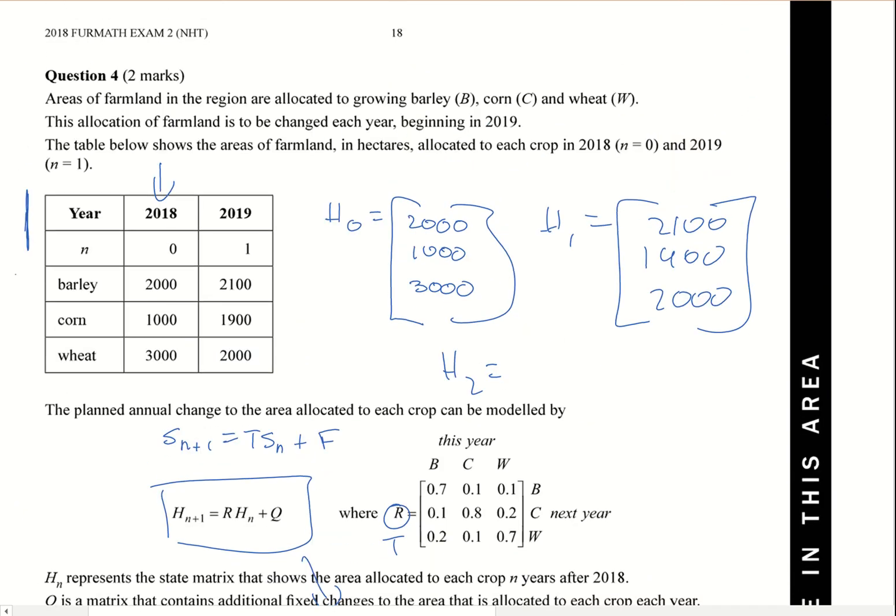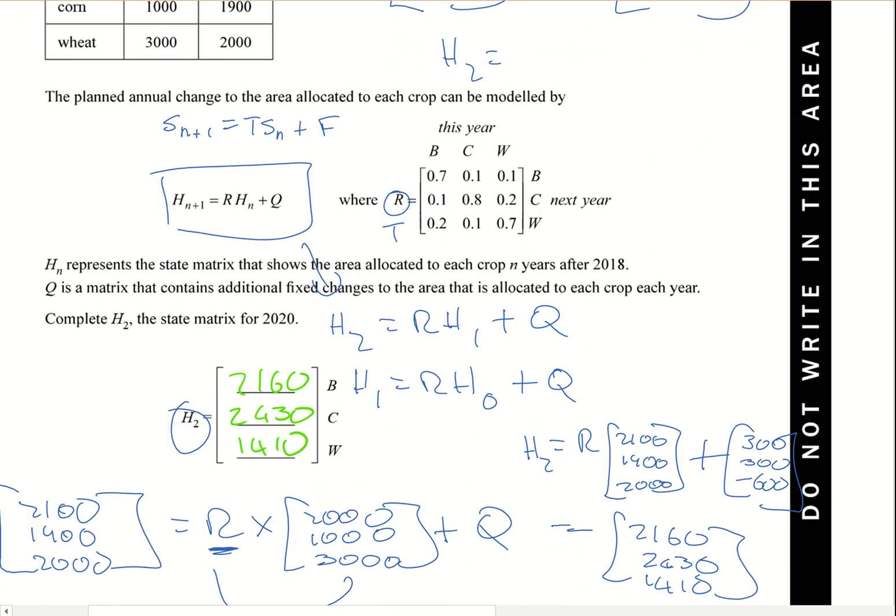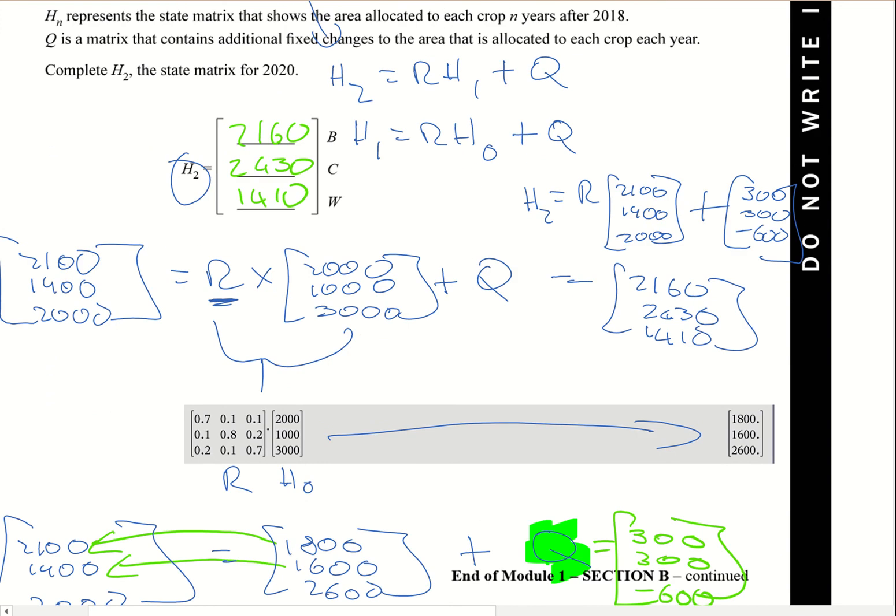Now this question here is a two mark question, so it's a bit of work to do for a two mark question. But the key point here as I said before was you need to work out q, and once you've worked out what q is, you can use that to work out h2.